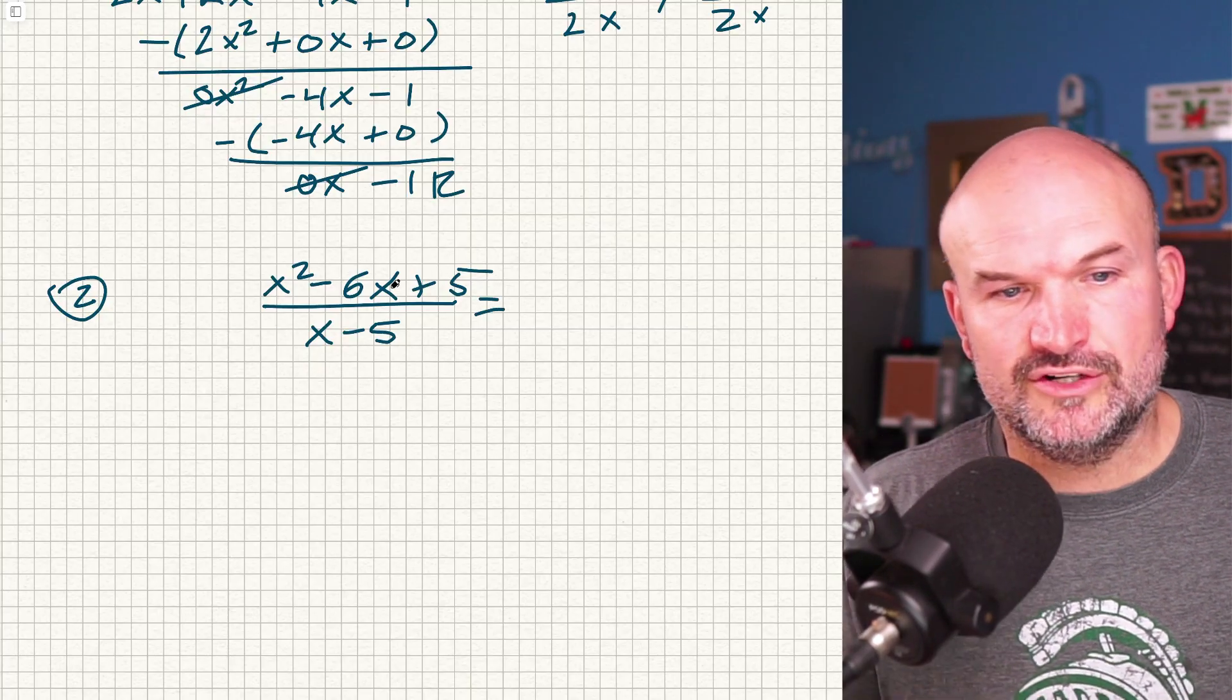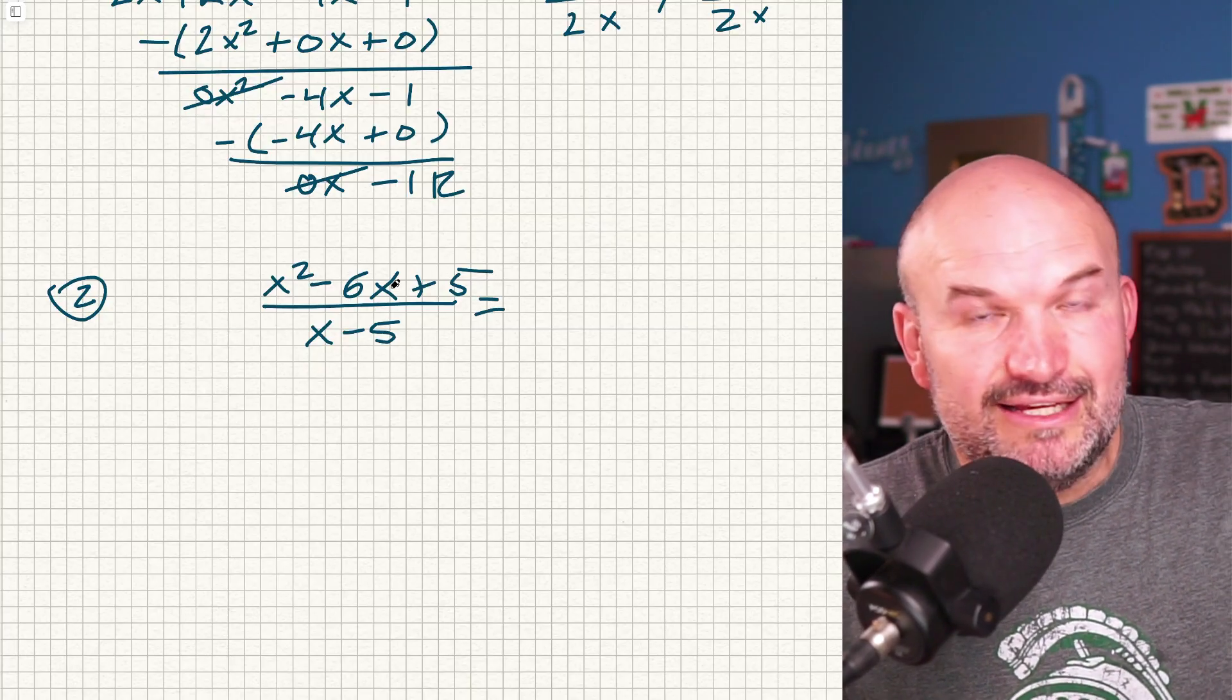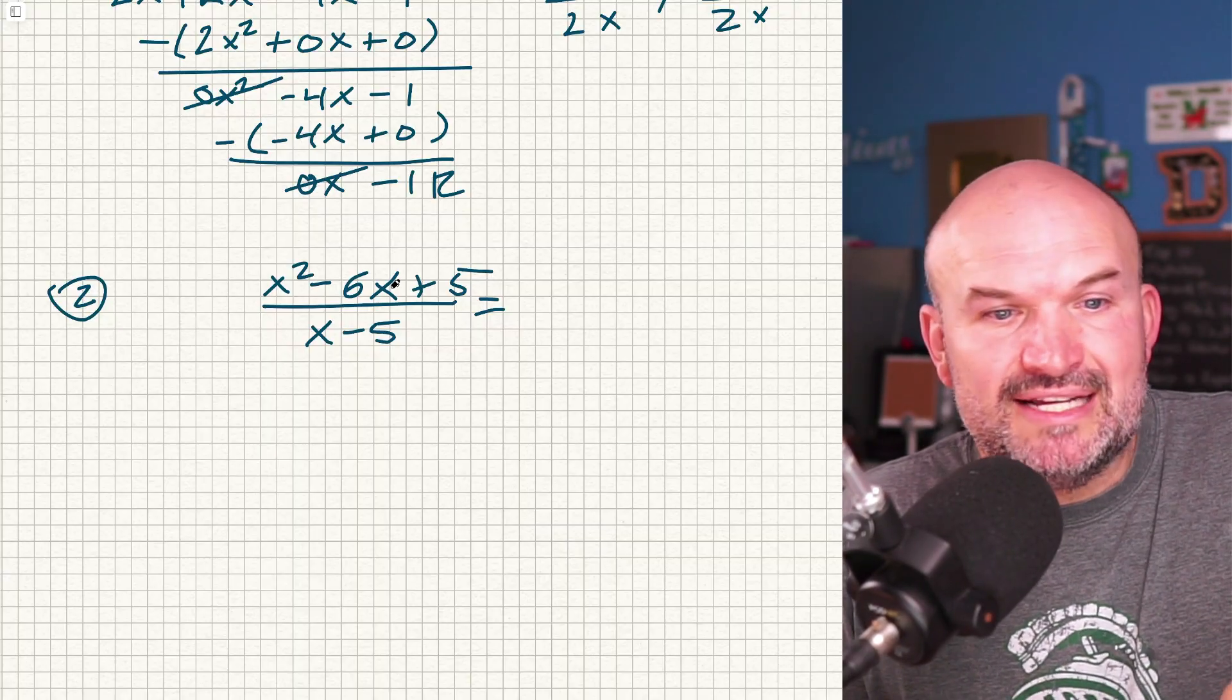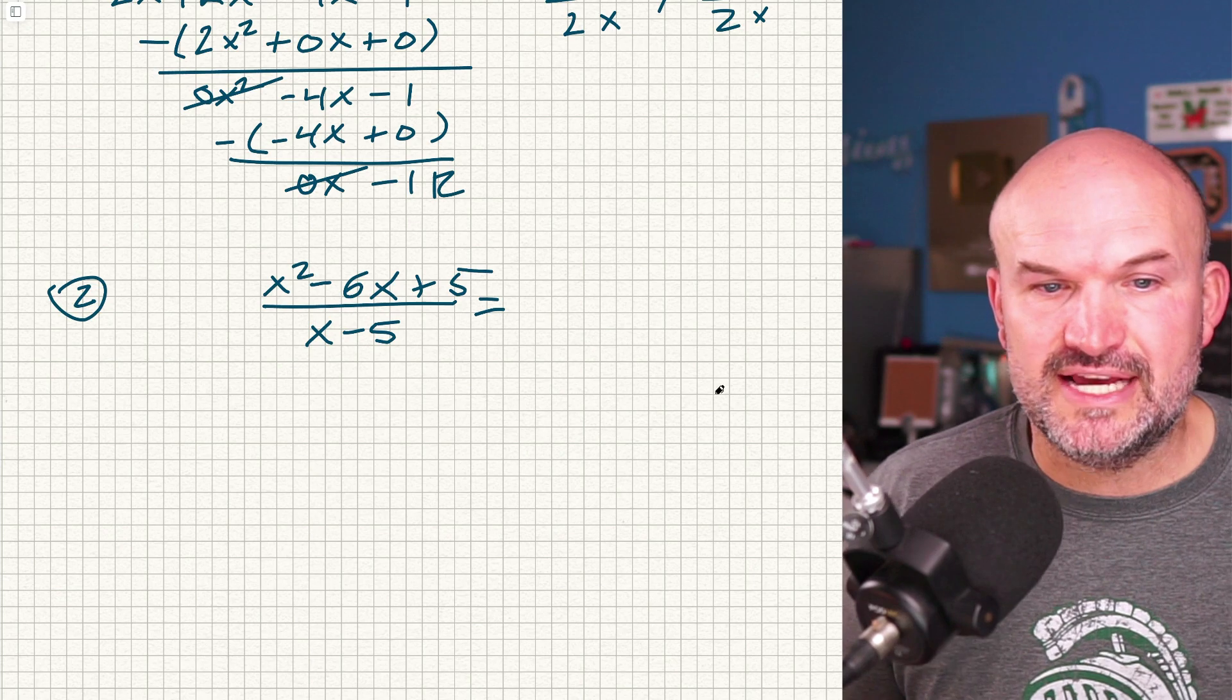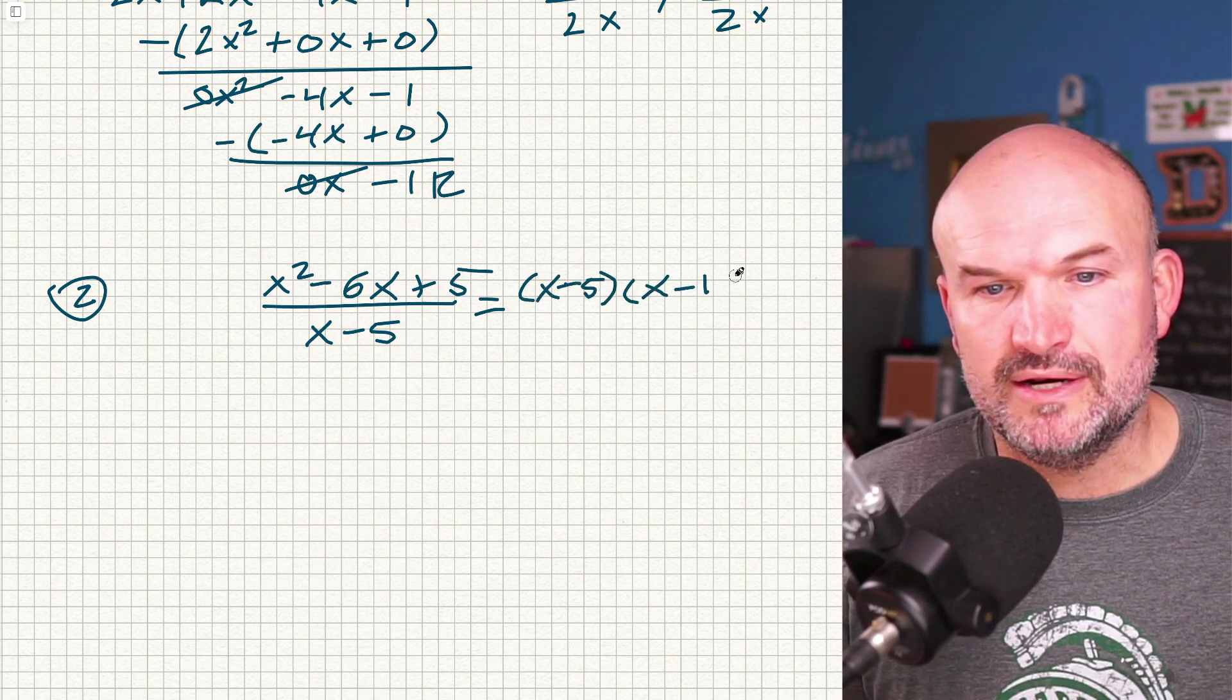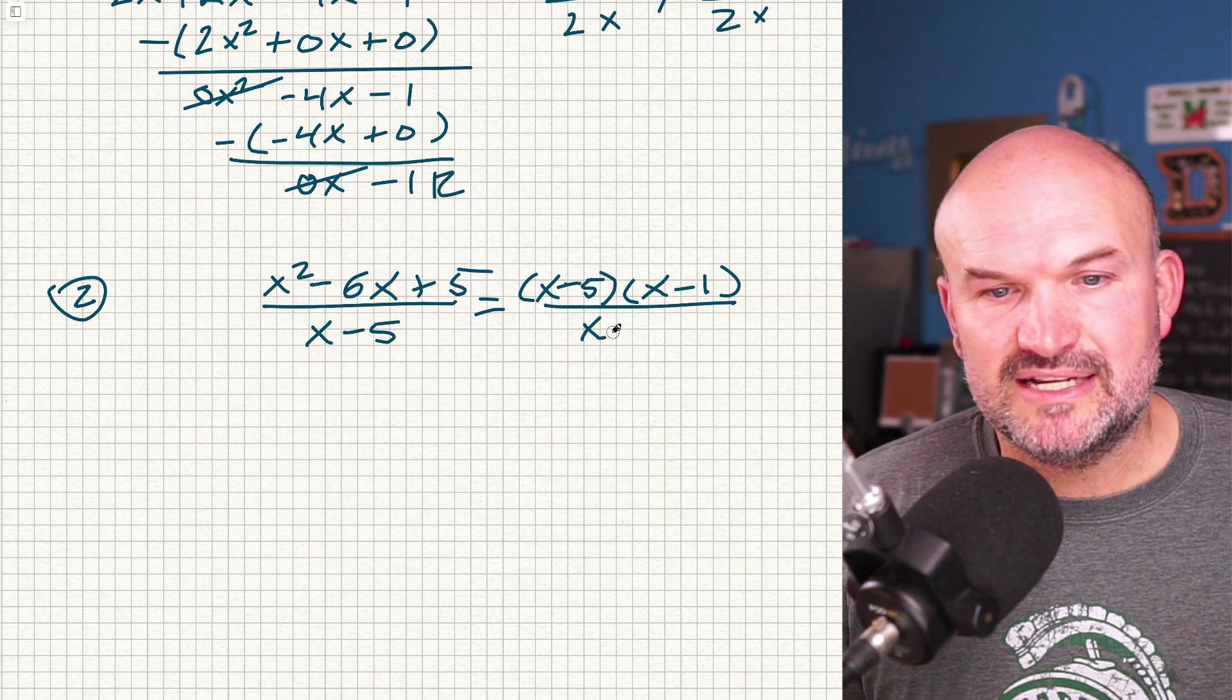And hopefully you recognize here this quadratic trinomial immediately is like a ding, ding, ding. Is this factorable? What two numbers multiply to give me a positive 5, add to give me a negative 6. And immediately I can see this is going to be x minus 5 times x minus 1 divided by x minus 5.